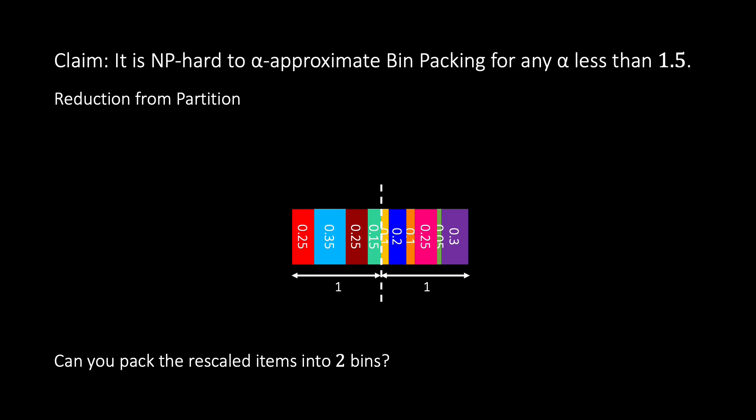If we want to have an approximation ratio below 1.5, we need to use less than 3 bins. In other words, we need to use two bins only.